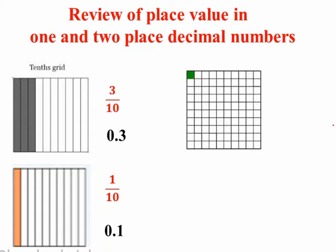Look at this square. Here the square is divided into 100 equal parts, so the colored part shows 1 by 100. We can also write this in decimal form as 0.01. In 100 there are two zeros, so after the decimal point there will be two decimal places — so 0.01.